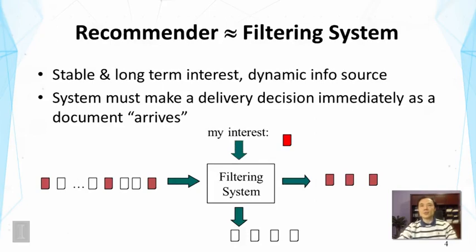A recommender system is sometimes called a filtering system because recommending useful items to people is like filtering out the useless articles. In all cases the system must make a binary decision. There is typically a dynamic source of information items, and using knowledge about the user's interest, the system decides whether an item is interesting and, if so, recommends it to the user.